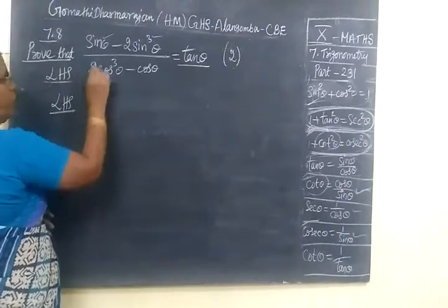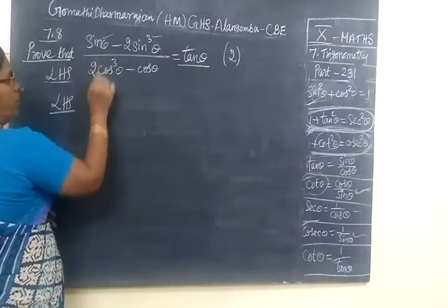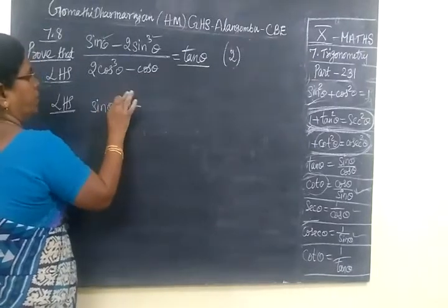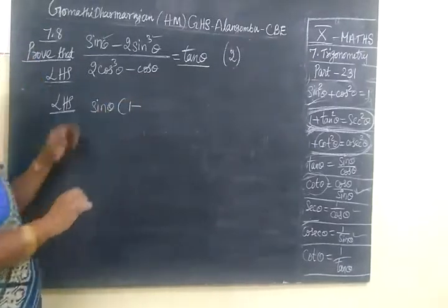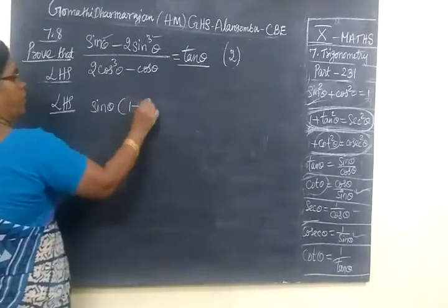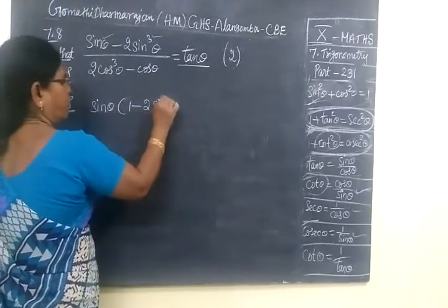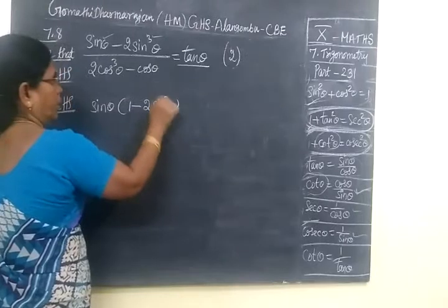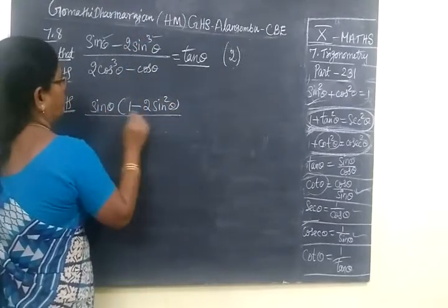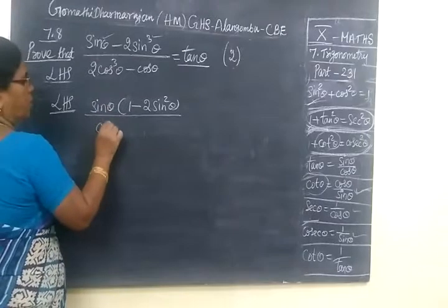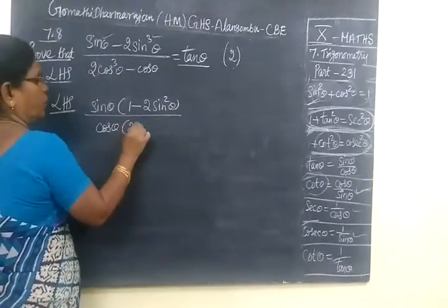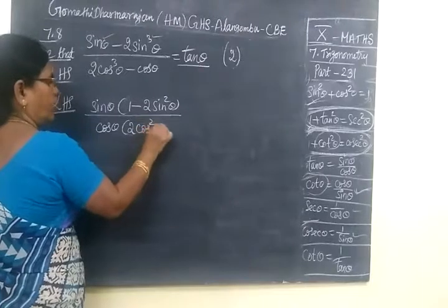The first step is sin theta. I told you that sin theta equals 1 minus 2 sin squared theta, plus 1 sin squared theta. This means cos theta: 2 cos squared theta.